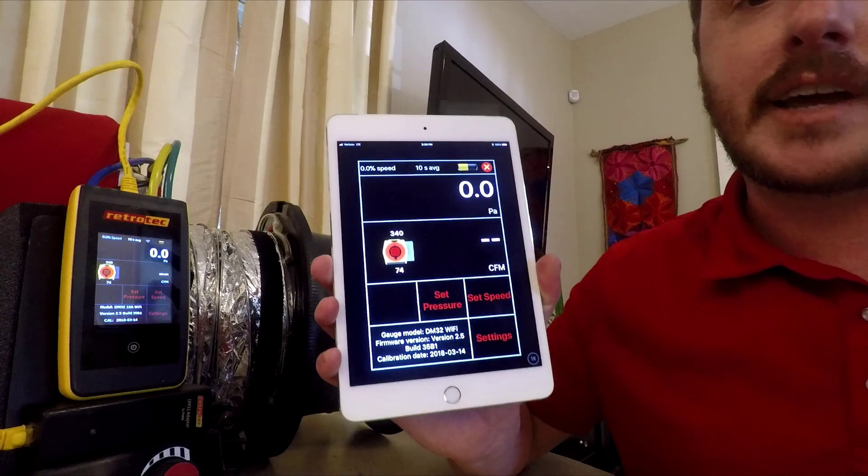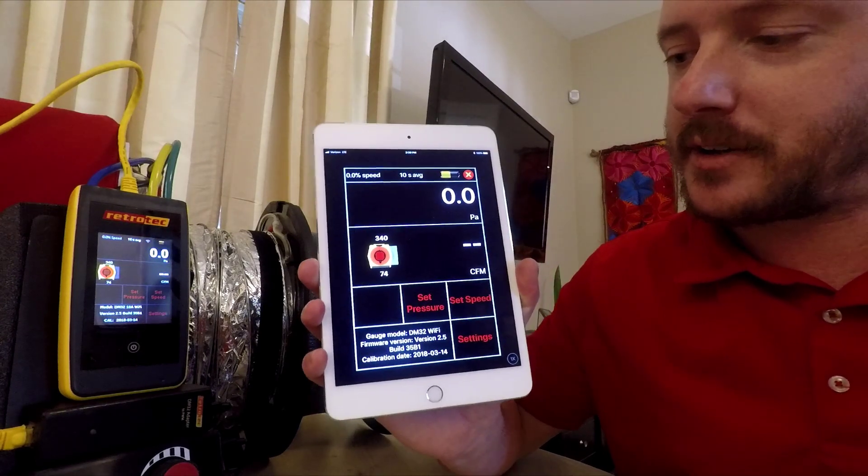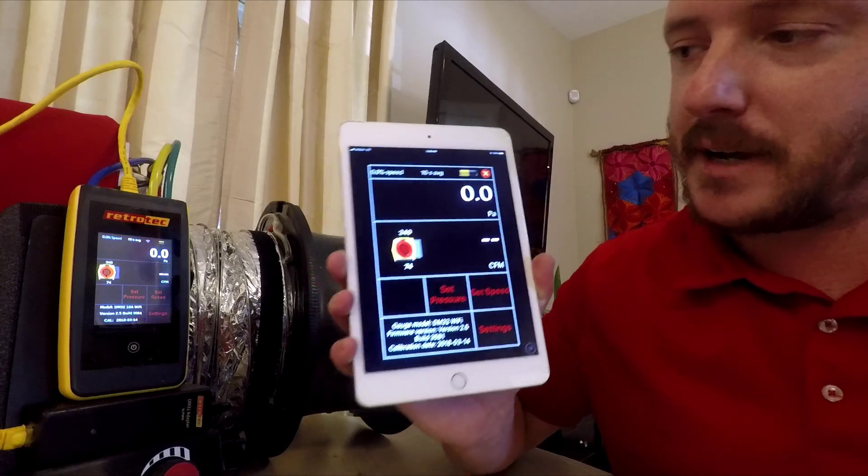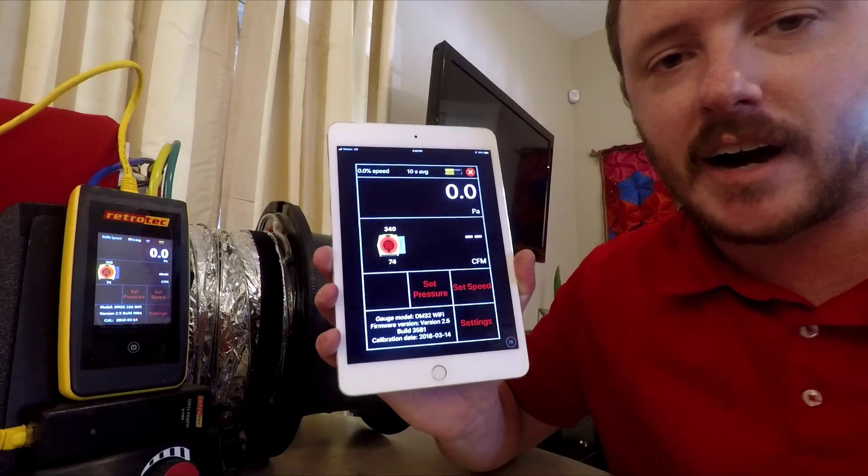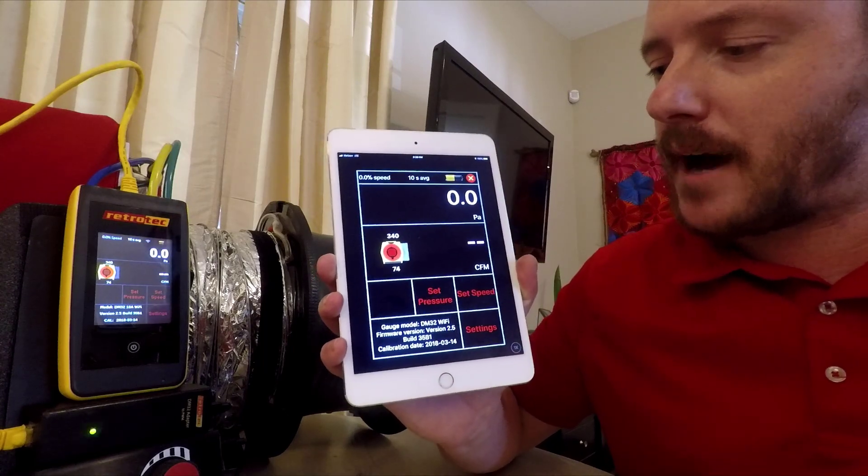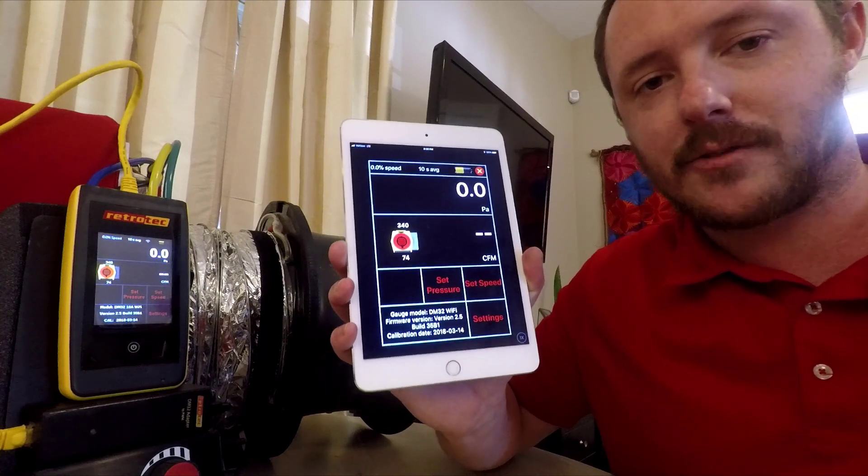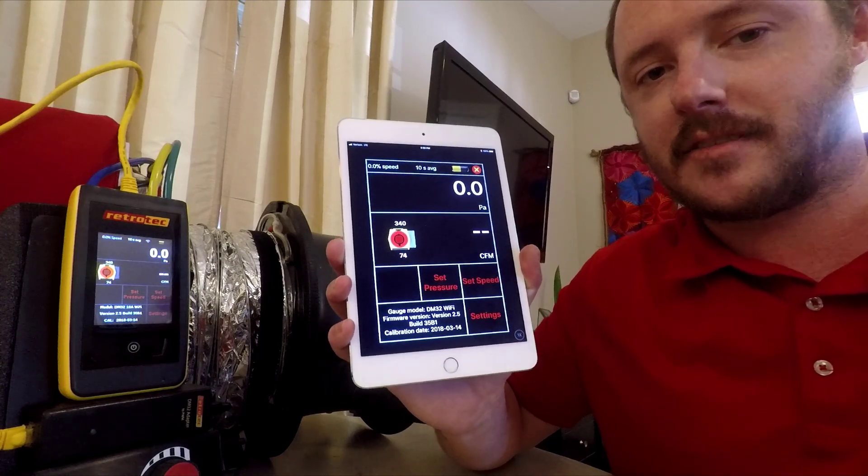So I'm going to use our gauge remote app to make things show up a little bit clearer on camera. So you can see here that this app basically just mirrors the screen from the gauge on your device. You can use a phone or a tablet, Apple or Android, it'll work with anything. That way you can test remotely from anywhere in the house. So if you're looking for leaks in an attic or a crawl space, this makes life a lot easier.